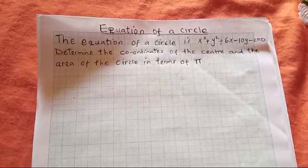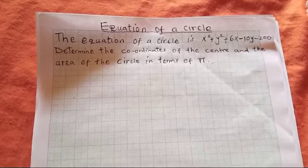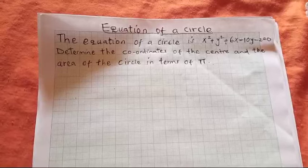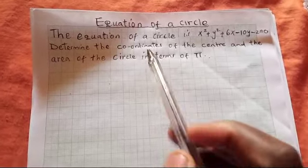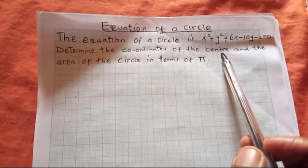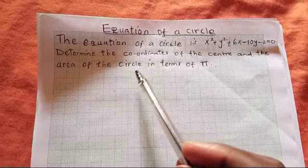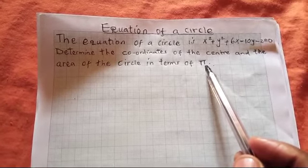There are two key points here that we need to pay attention to. One of them is the coordinates — we will have to find the coordinates of the center of the circle. After finding the coordinates, we go ahead to calculate the area of the circle and we leave our answer in terms of pi.